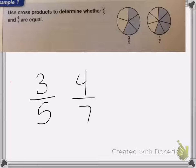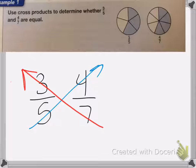Now a cross product is when we multiply the bottom by the top on both sides, form an X, a cross. So I'm going to do 5 times 4 is 20, and 7 times 3 is 21.